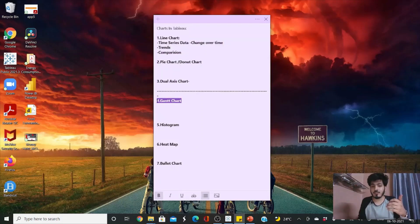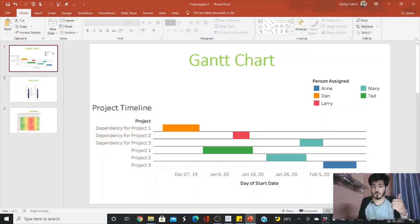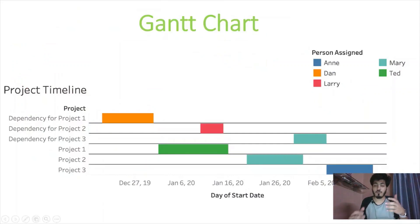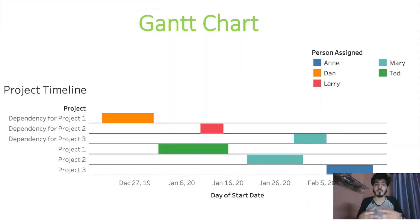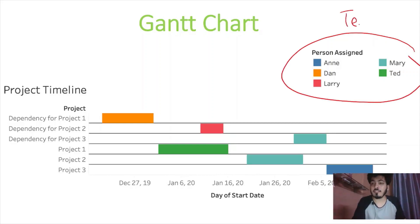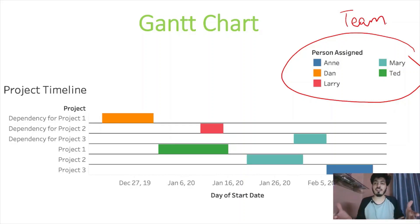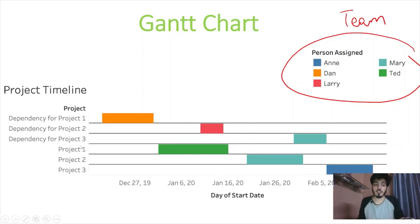Let's start with the Gantt chart first. A Gantt chart is basically used to show a timeline. For example, if you're working in an IT industry and you have a team with different members who have different responsibilities — in this example we have three projects: project one, project two, and project three.